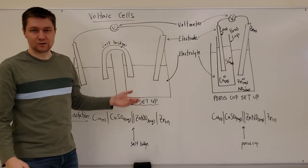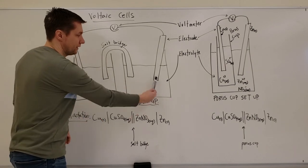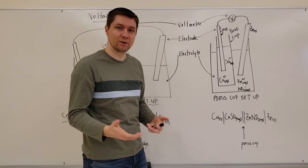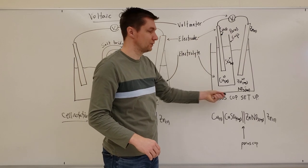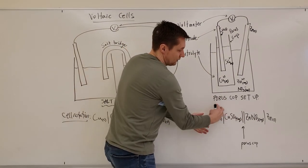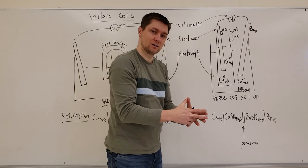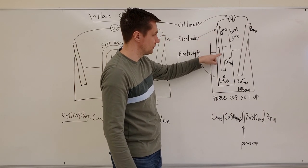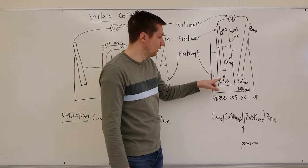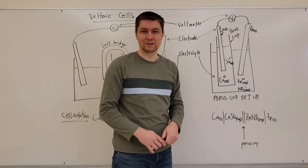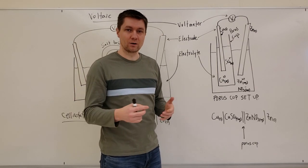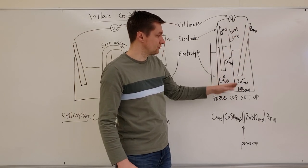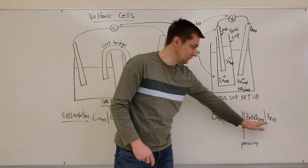The electrolyte is just a solution that contains ions, so in each beaker we have an electrolyte. In this porous cup example, I've labeled everything from the cell notation into the actual diagram. The electrode is copper sitting in copper sulfate solution - copper 2+ ions and SO4 2- ions. Remember those are soluble in water, which is why we dissociate them into their ions. Over here in the outer beaker is the zinc electrode with zinc ions and nitrate ions.